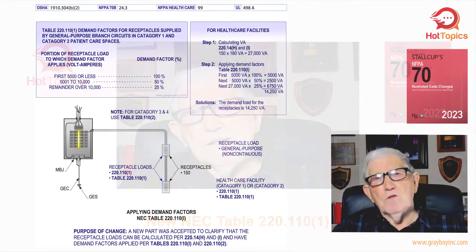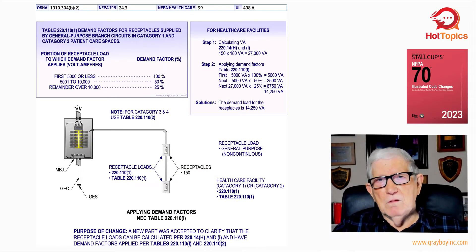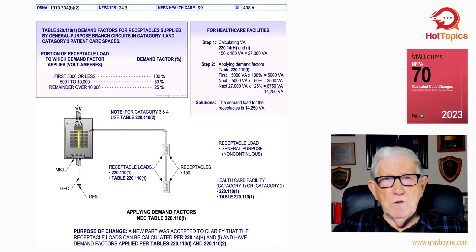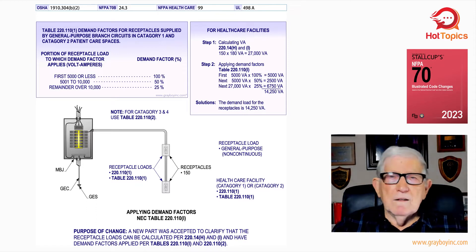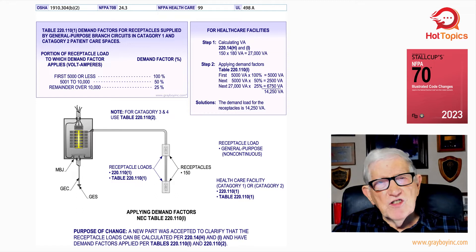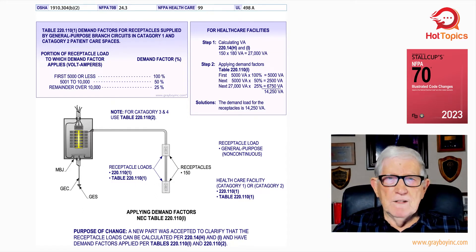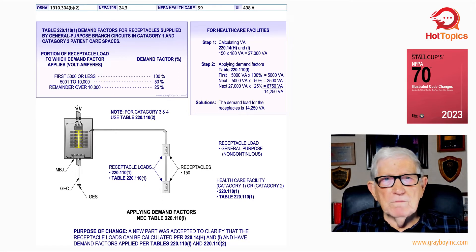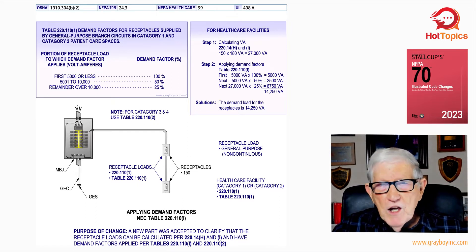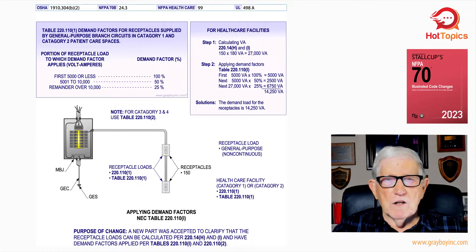And then in the 2023 edition, with the new table that they relocated and provided — the new table 220.110.1 — it only pertains to receptacle loads. It seems that the lighting loads have disappeared. We'll see shortly that they restricted these receptacle loads to certain locations in a healthcare facility or a hospital.